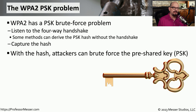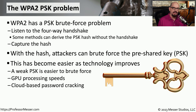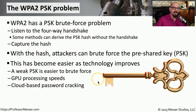Once the attackers have the hash, they can then take that hash offline and begin running it through a brute force attack to ultimately find the pre-shared key. As our technologies have improved, we've found new ways to begin brute forcing even more efficiently. These days, you can use techniques such as GPU processing or cloud-based password cracking to be able to reverse engineer that password in just a number of days.